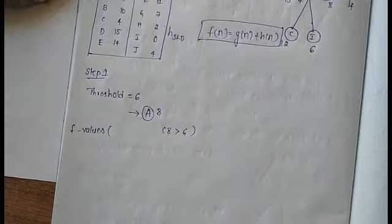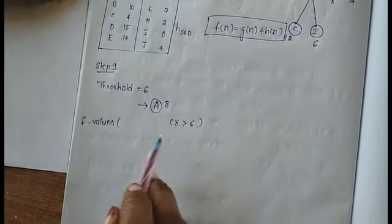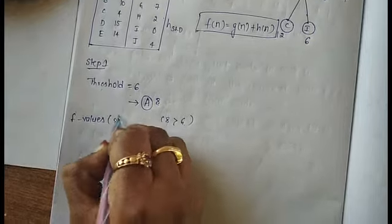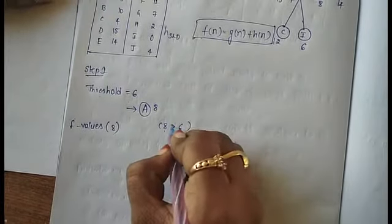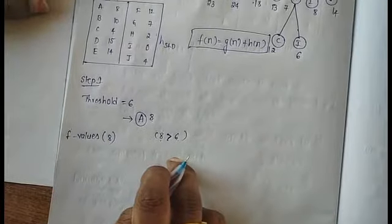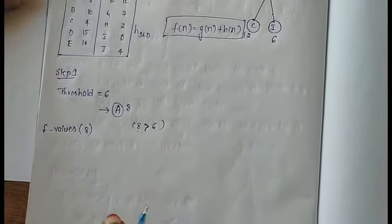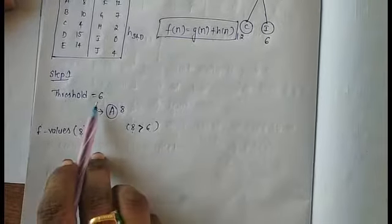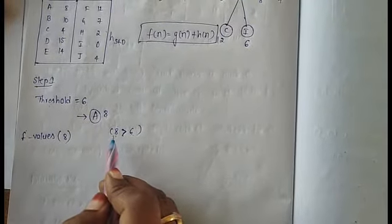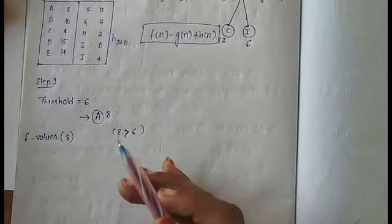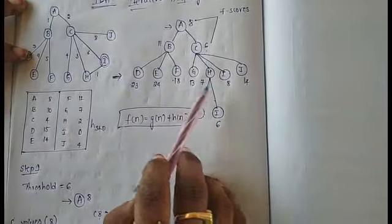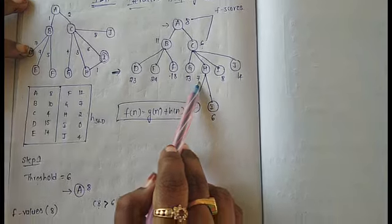We will adjust the list of F values. If we have values greater than the threshold, we will note the value 8. If the F-score is less than or equal to the threshold, we continue the expansion. In the next step, we increase the threshold. We will consider the new threshold value as 7.